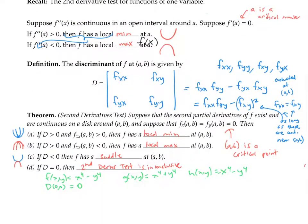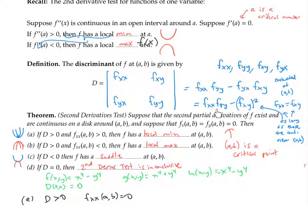As a final comment, I want to point out that if you look through all of these cases carefully, you'll see there's one case that's missing: what about the situation when the discriminant is positive but f_xx is equal to zero? Well, if you look at the expression for the discriminant, that case is not possible — if f_xx is equal to zero, then the discriminant has to be either negative or zero. So we really have considered all the cases.